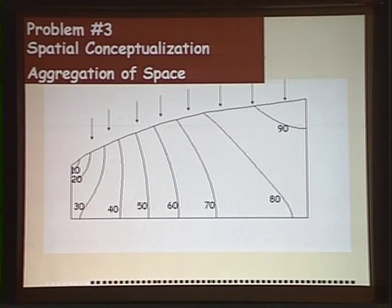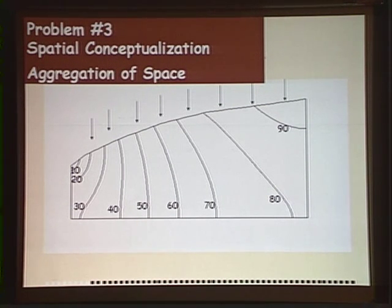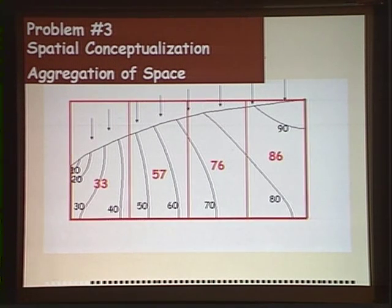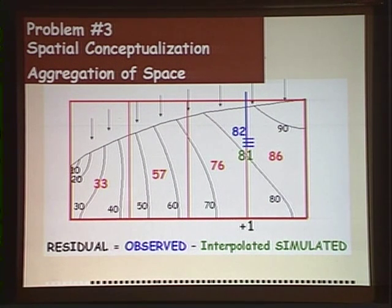The third problem is our spatial conceptualization — we have to aggregate in space because our models cannot be built to represent every small micrometer of space. If we take a system with no-flow boundaries on the west, east, and base, recharge at the top, and homogeneous hydraulic conductivity throughout, we get a smooth hydraulic head field. If we represent that with elements, we only get an average value of head for each element. Then if we measure head at a screened interval in a well with absolutely no error in that measurement and go to compare with our model, we have to interpolate between calculated values of head — and we see there's a residual even though we knew the system perfectly and had no error in our measurement.